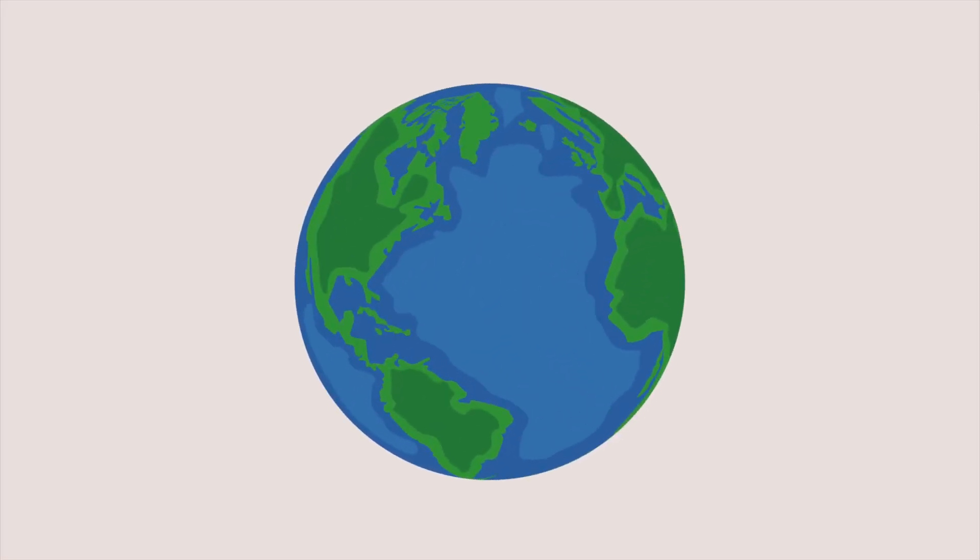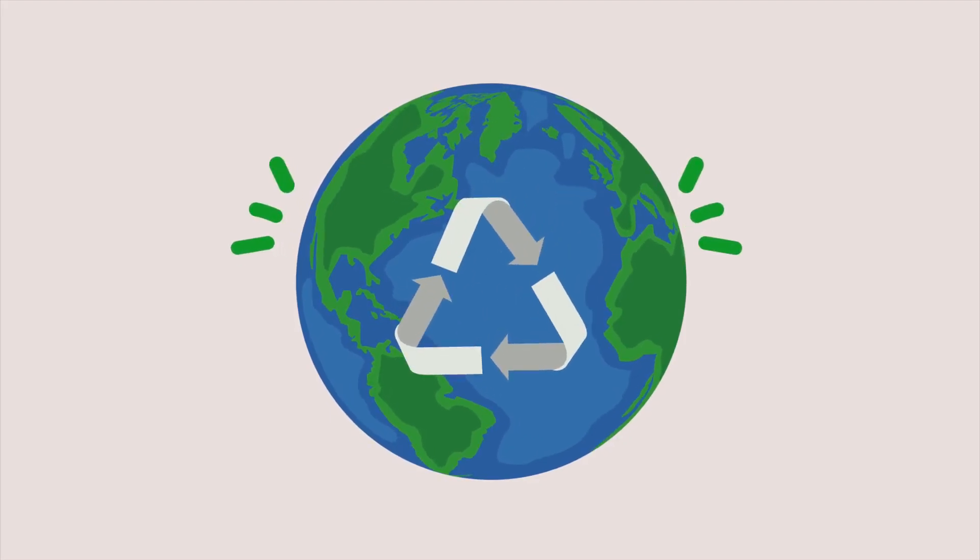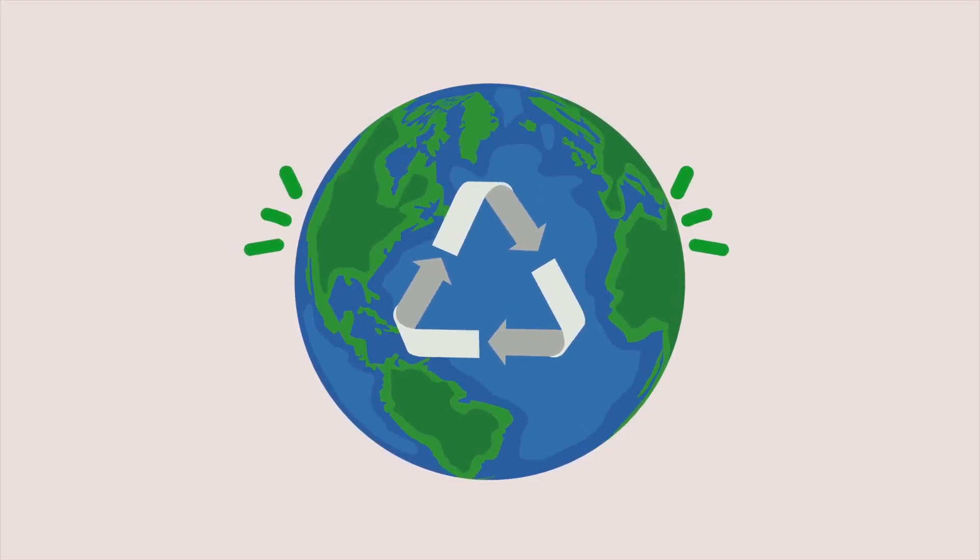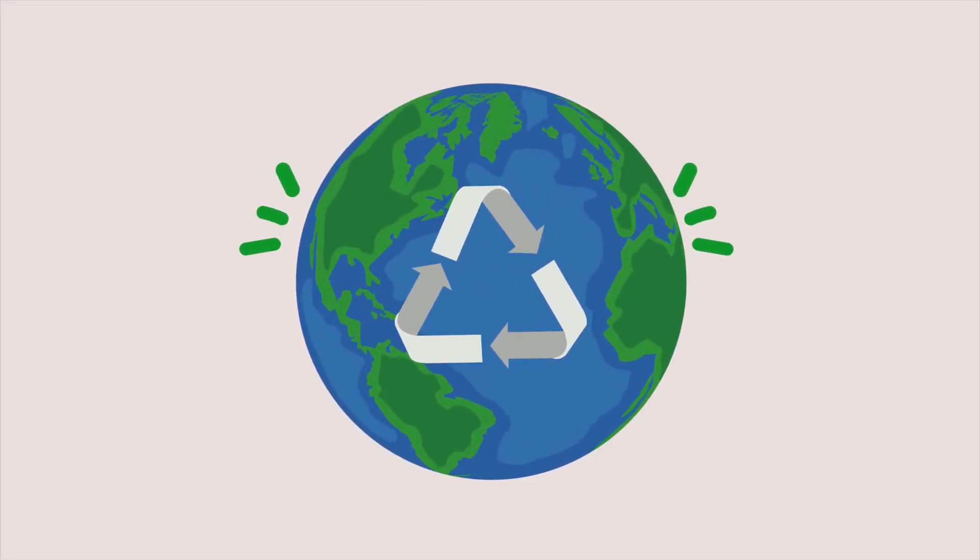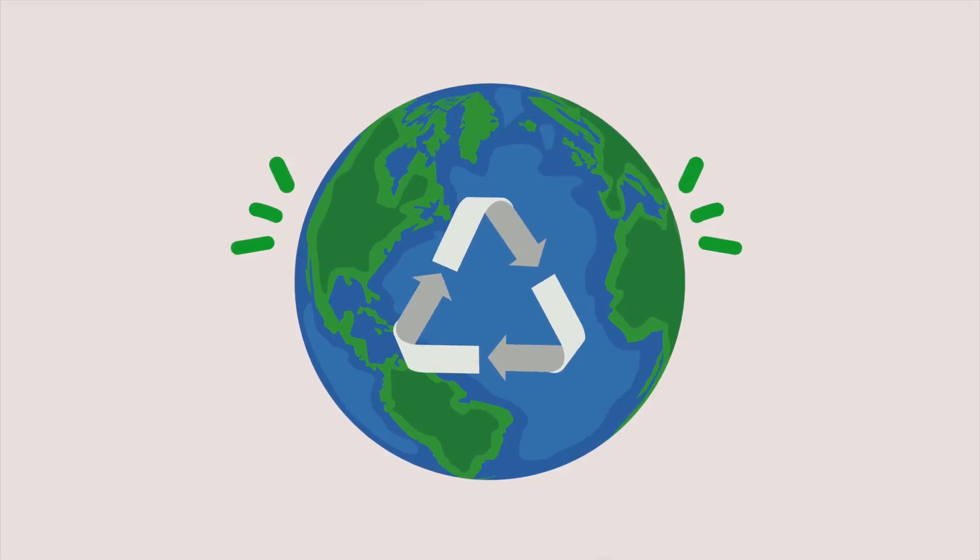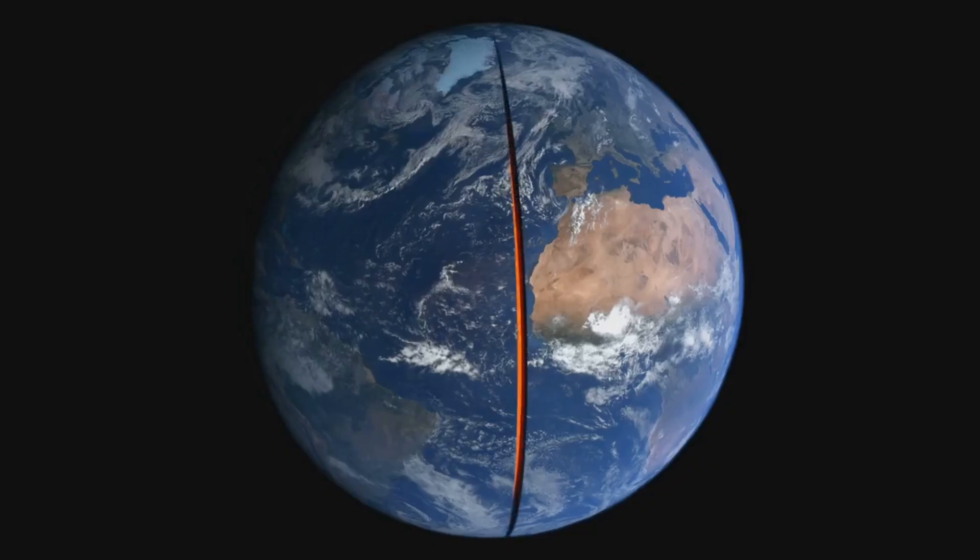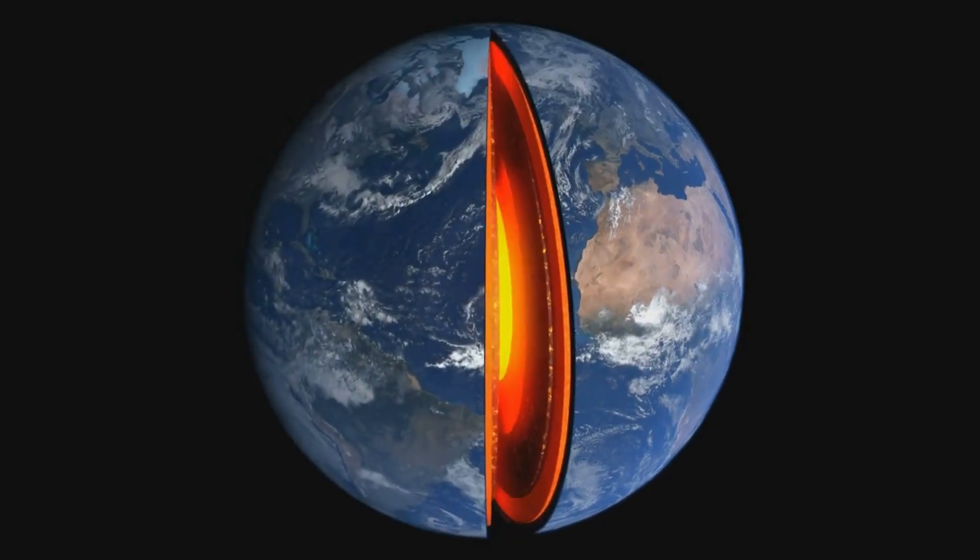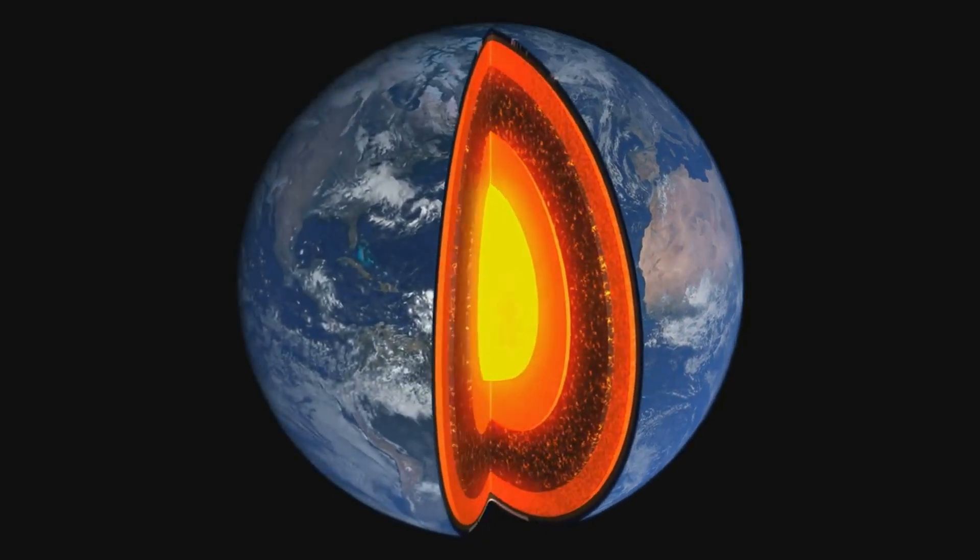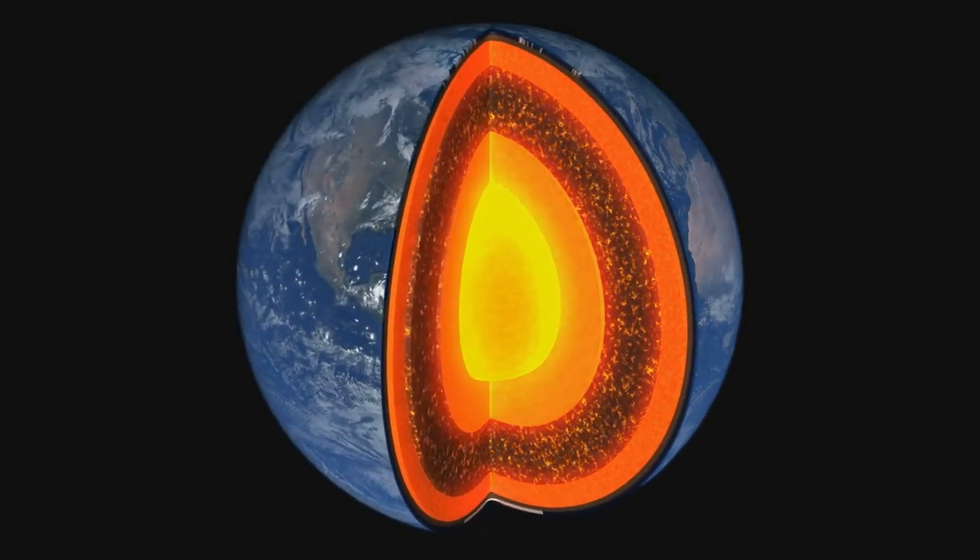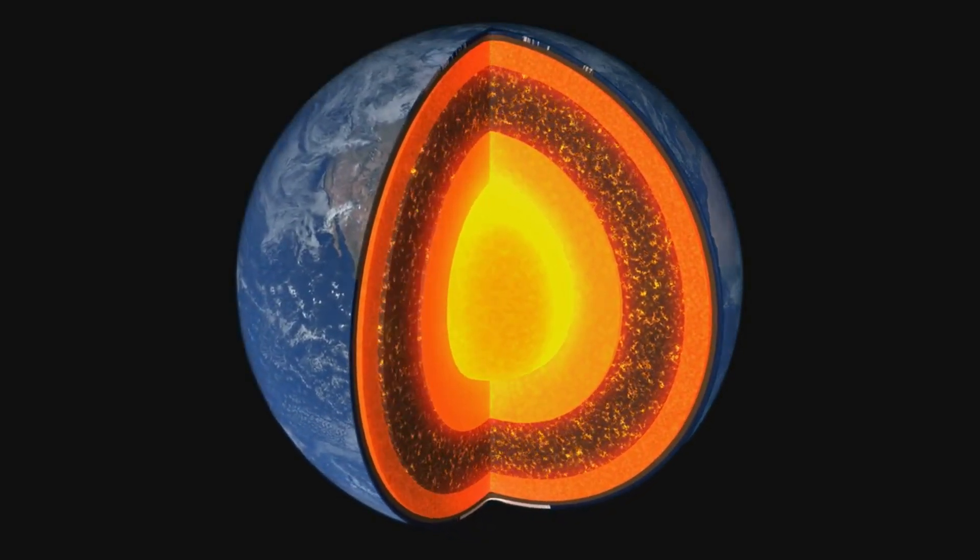At the very center lies the core, composed mostly of iron and nickel. This dense core is divided into two parts, the inner core and the outer core. The intense pressure at this depth creates a solid inner core and a liquid outer core. The inner core remains solid due to the immense pressure, despite the high temperatures.